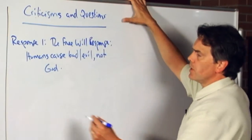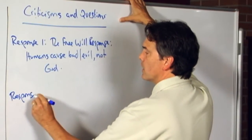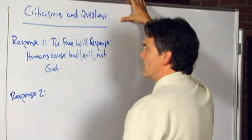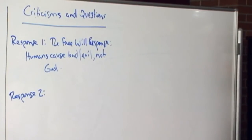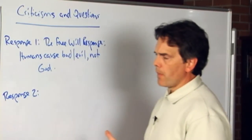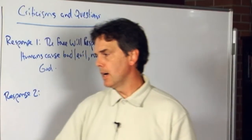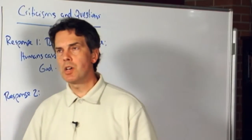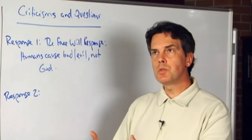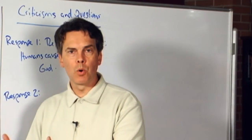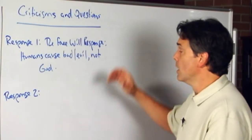Now, another standard response to the argument from evil, I'll list a number of them, and then we can kick them around a little bit in terms of assessing their logical strength, is to say that it is possible that God created a perfect world, but he did allow some imperfections to come into existence and develop because those imperfections allow for some sort of greater good to come into existence.